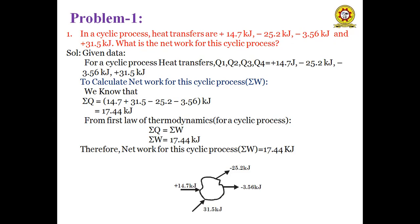The first heat transfer is plus 14.7 kJ — this represents heat addition to the system. Q1 represents plus 14.7 kJ, which is heat added to the system. Next one is minus 25.2 kJ, which represents heat rejection from the system.